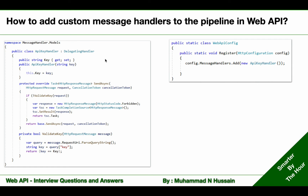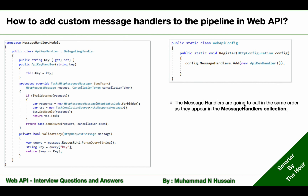We can use the same steps to create another message handler and add it in the same way. Just remember, message handlers are called in the same order as they appear in the MessageHandlers collection. From a request point of view, the first added handler is called first; from a response point of view, the later one is called first, and then this one after that, and so on.